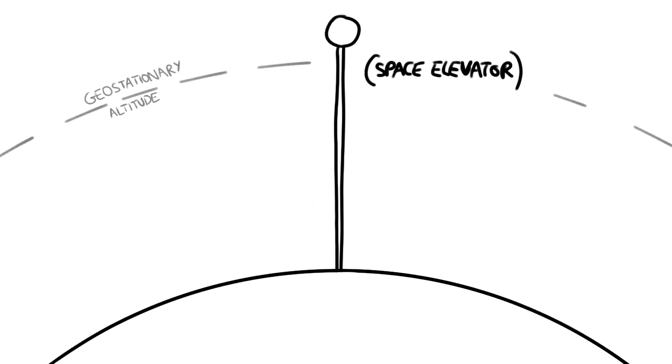As a result, objects making use of gravity gradient stabilization require components that extend a greater distance. A perfect example of this would be space elevators, which extend past the altitude of geostationary orbit and remain perpendicular to the surface.